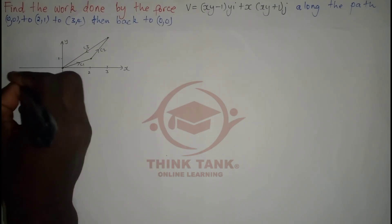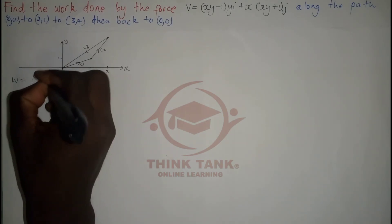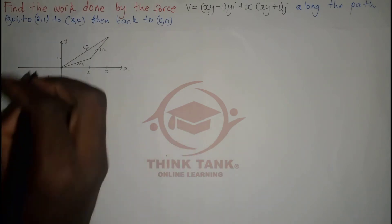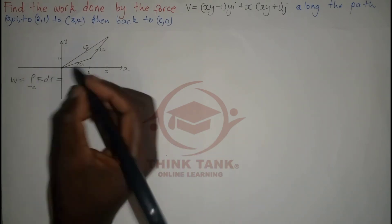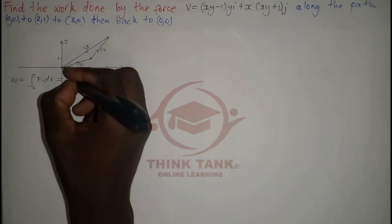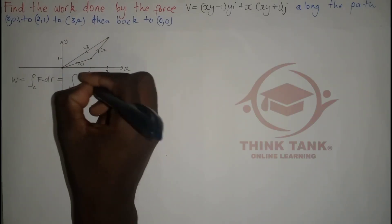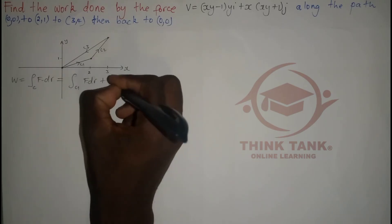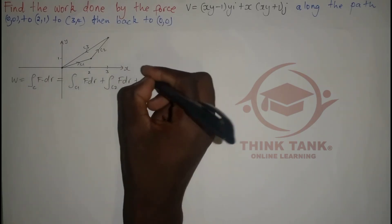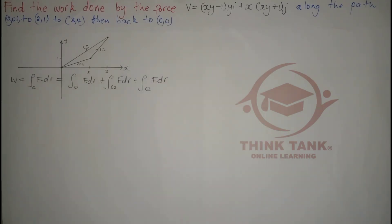The work done is given by the integral of F·dR. The closed path C is made up of segments, so it's going to be the integral over C1 of F·dR, plus the integral over C2 of F·dR, plus the integral over C3 of F·dR.